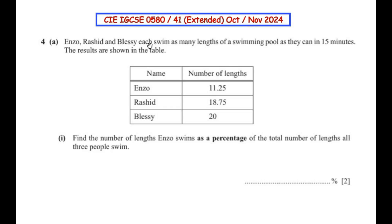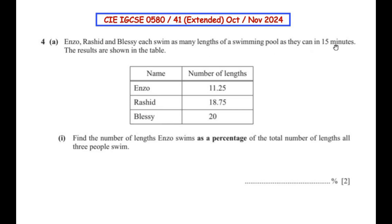Enzo, Rashid and Blessie each swim as many lengths of a swimming pool as they can in 15 minutes. The results are shown in the table. We need to find the number of lengths Enzo swims as a percentage of the total number of lengths all three people swim.